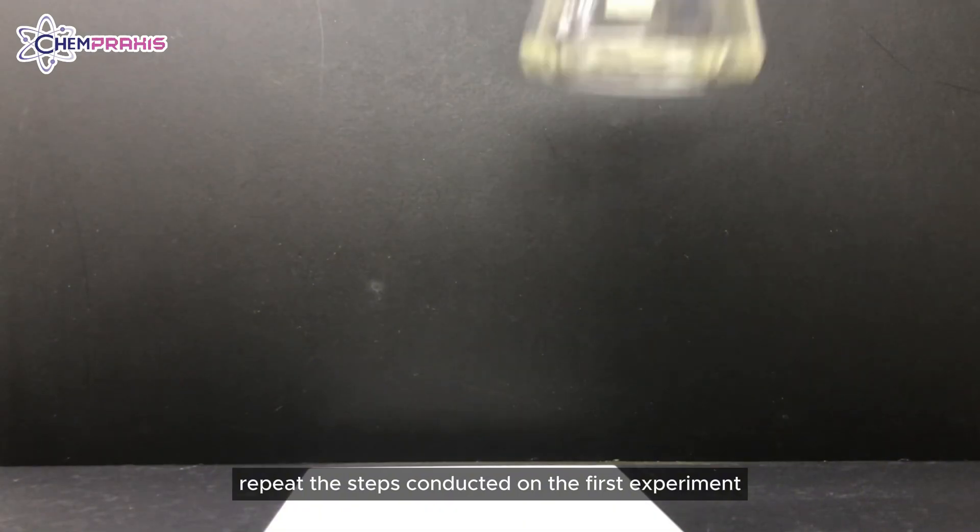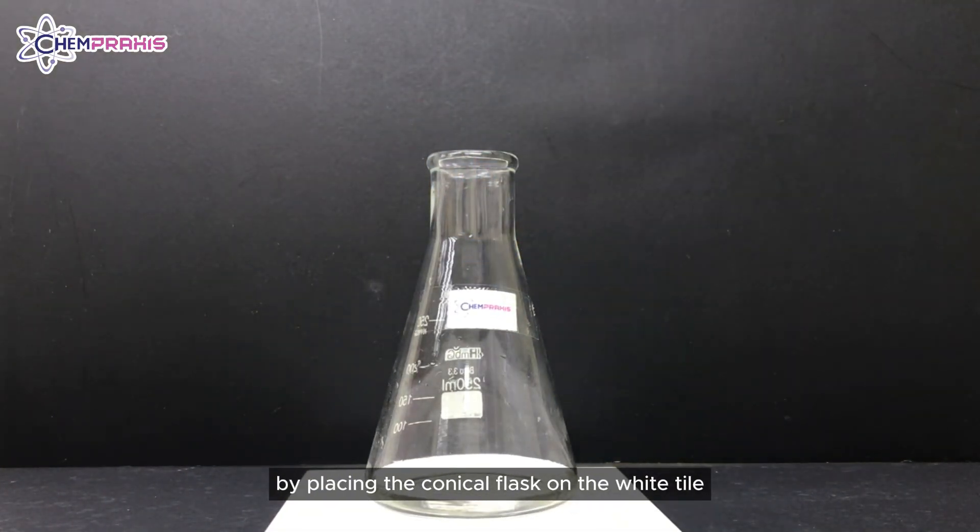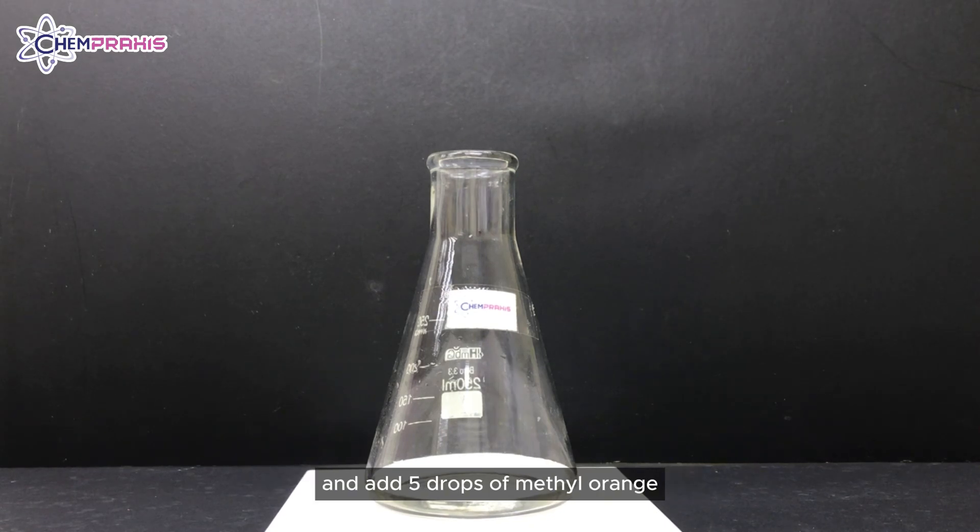Repeat the steps conducted on the first experiment by placing the conical flask on the white tile and add 5 drops of methyl orange indicator into the conical flask.